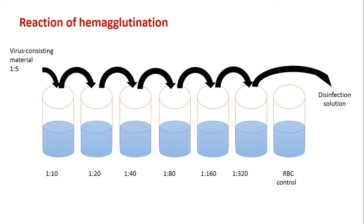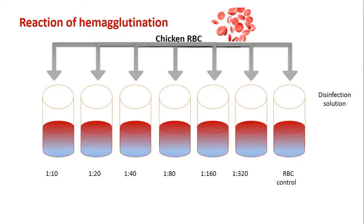After that, we add red blood cells to each serial dilution of the viral suspension. We try to detect the highest dilution that produces hemagglutination, which provides the hemagglutination titer.